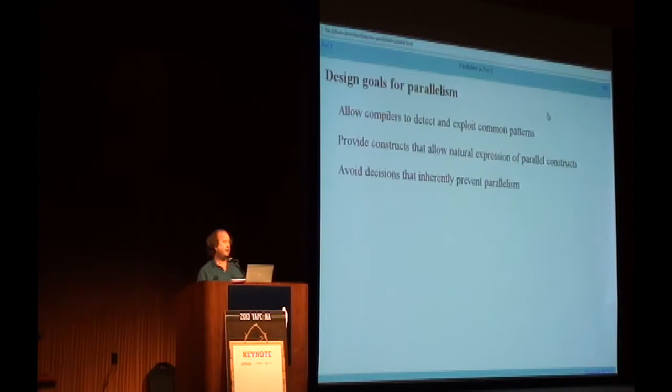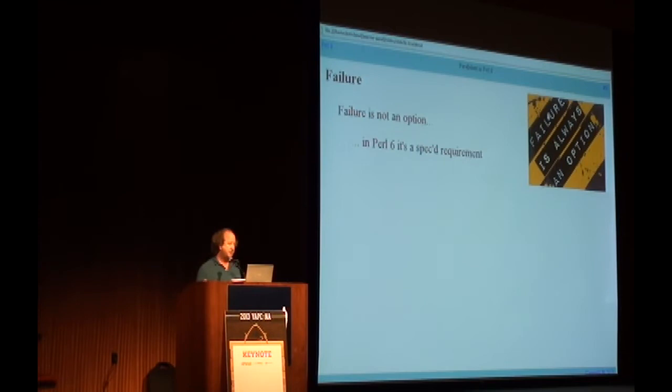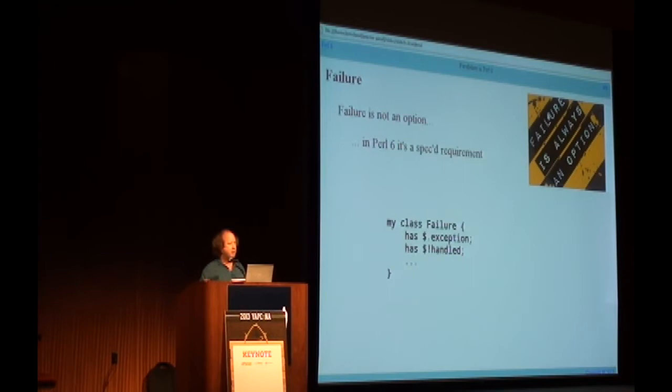The other thing you have to do is make sure you don't make any design decisions that inherently prevent parallelism from taking place. An example of a design decision driven by the need to support parallelism is the concept of failure. In Perl 6, failure is not an option — it's mandatory. It's a specified requirement. There is a failure class in Perl 6, and this is the way we return values where something went wrong.